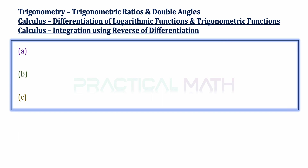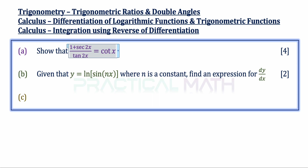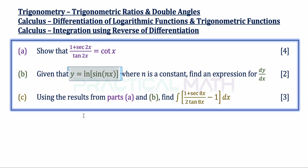In part A of the question, show that 1 plus sec 2x over tangent 2x equals cot x, and that's a 4-mark question. In part B, given that y equals ln of sin nx, where n is a constant, find an expression for dy over dx — a 2-mark question. In the final part, using the results from both part A and B, find the integration of (1 plus sec 8x) divided by (2 tangent 8x) minus 1 dx, and that's a 3-mark question.